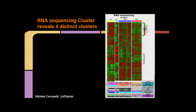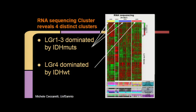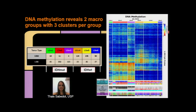The RNA sequencing data, representing over 667 gliomas, defines four major clusters — three dominated by IDH mutants and one by IDH wild type. We also looked at DNA methylation and identified two macro clusters dominated by IDH mutants and IDH wild type, with three subclusters within each group. We're calling all clusters LG — for lower grade glioma and GBM — followed by M for methylation platform: LGM1, 2, and 3 are dominated by IDH mutants, and LGM4, 5, and 6 are the wild types.